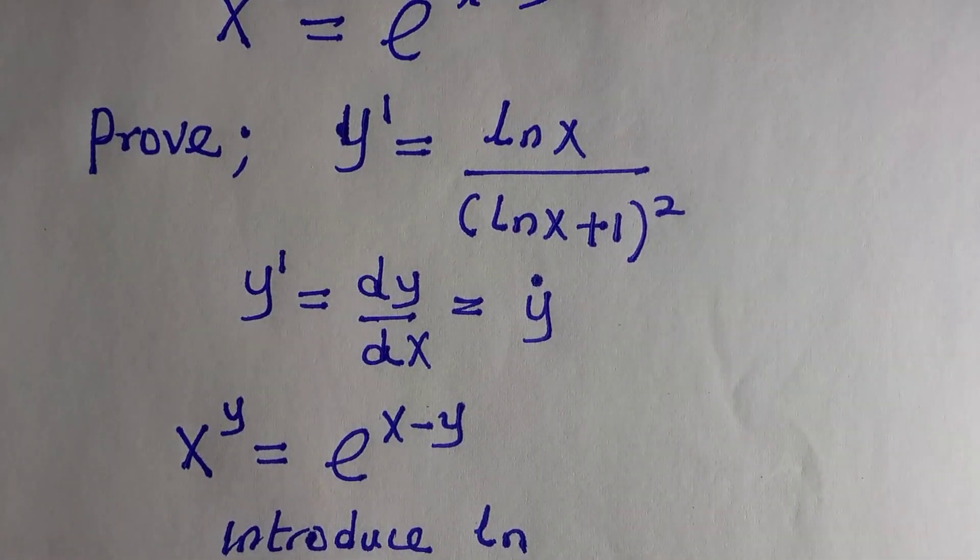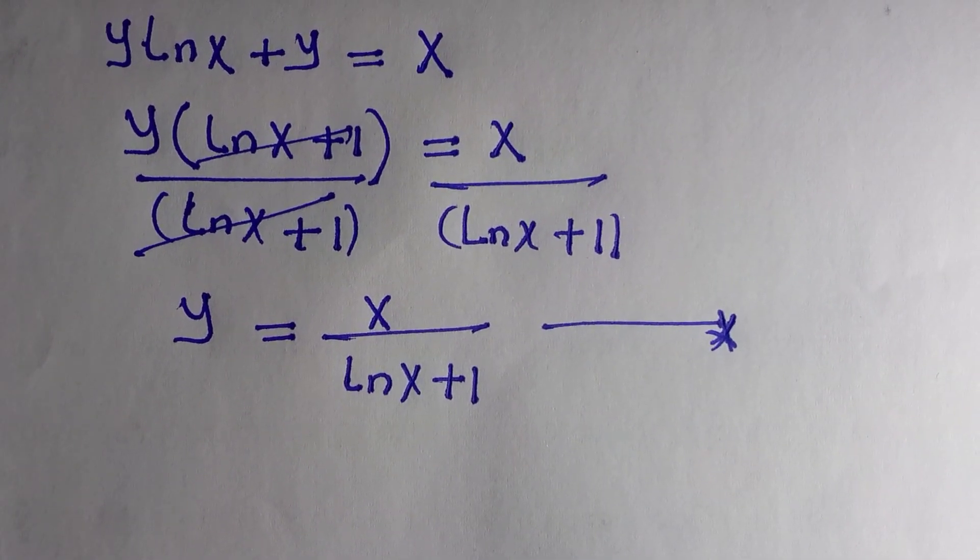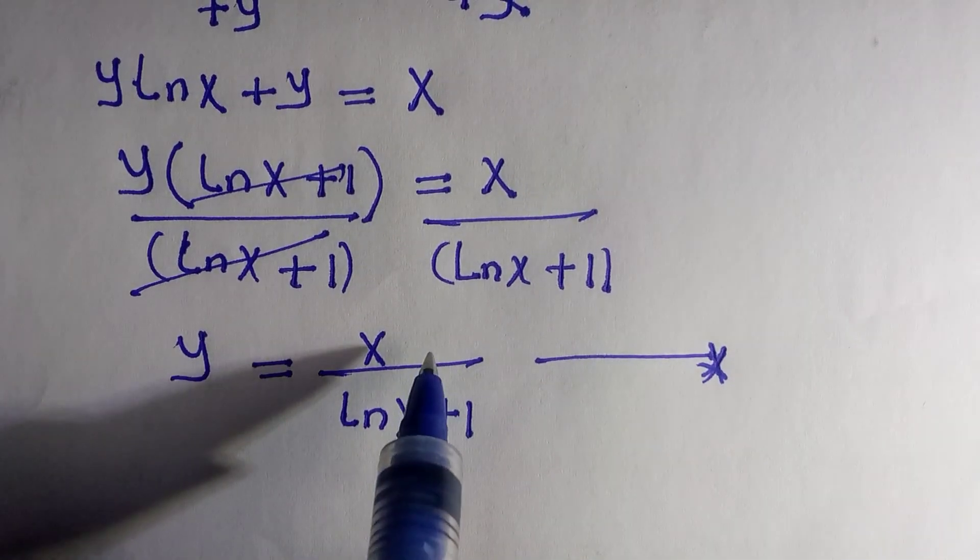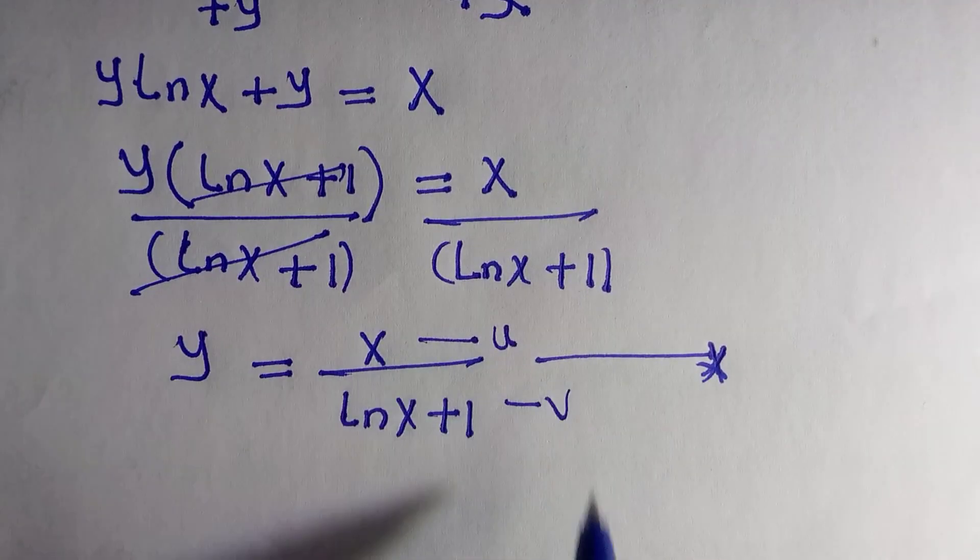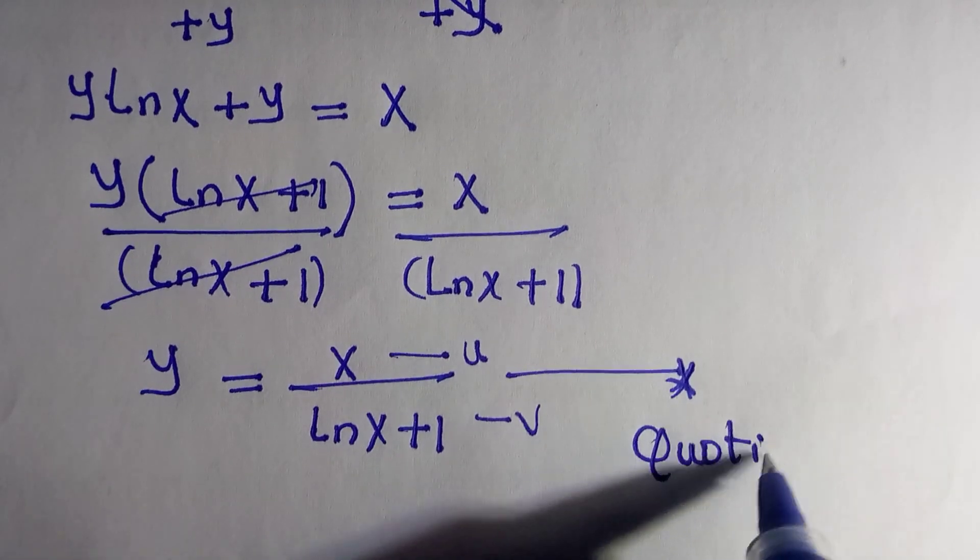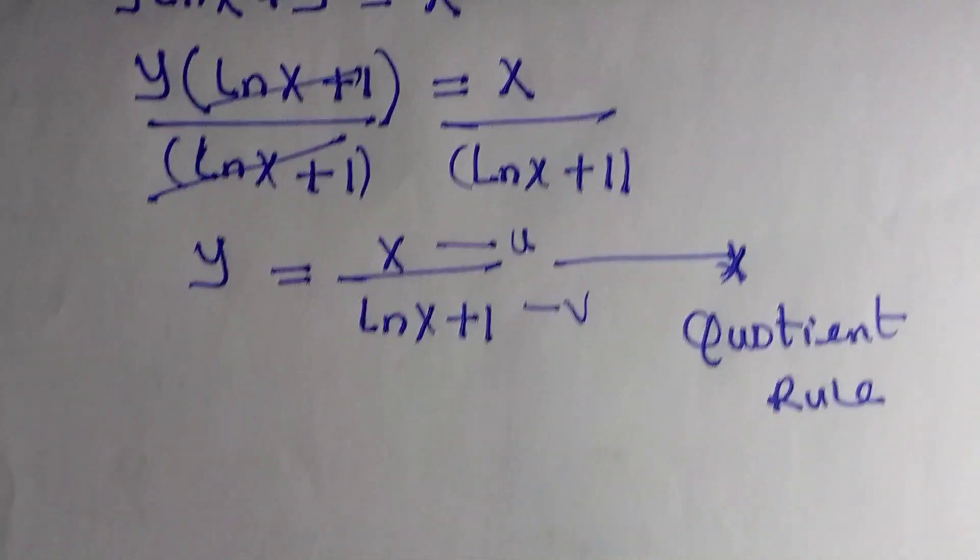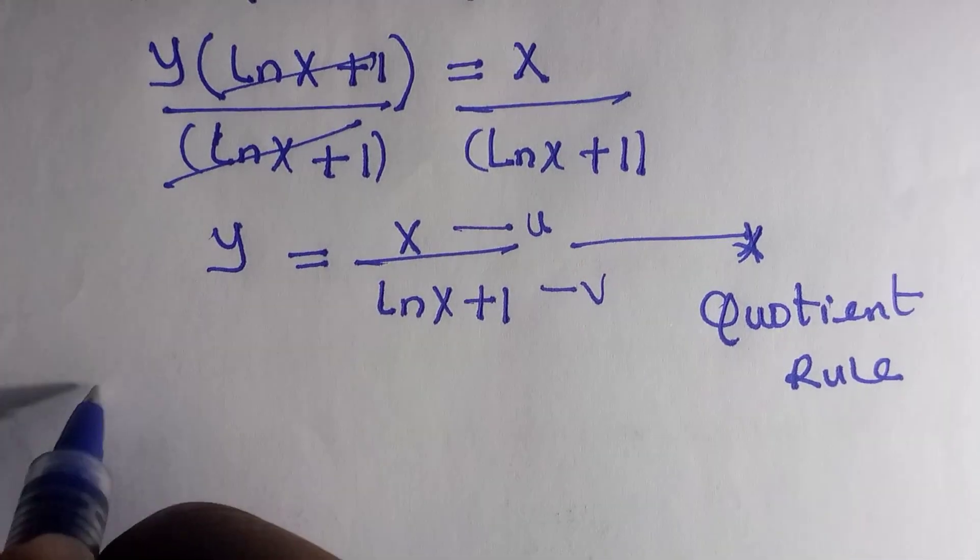But the question states obtain the derivative of this, which is dy/dx or y prime. And to do that we start differentiating, but this one is in quotient form and we call this one u and this one is v. So which means we are going to apply the quotient rule formula to solve this.